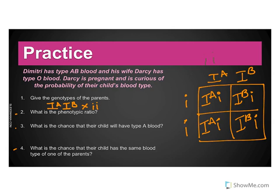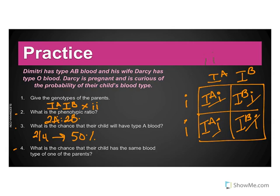Your Punnett square should look something like this. When we solve for the phenotypic ratio, we get one to one — two that are A blood to two that are B blood. The chance their child has type A blood is two out of four, which is 50%. For the next question — what is the chance their child has the same blood type as one of the parents — we only got A blood and B blood, so no one got AB and no one got O. The answer would be zero.